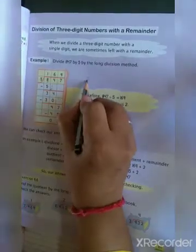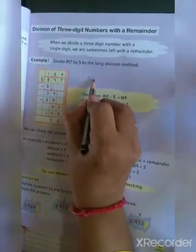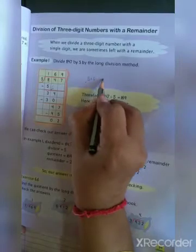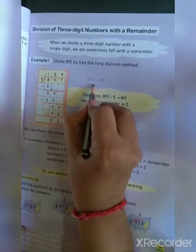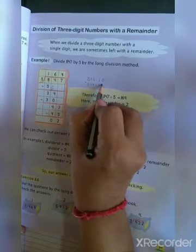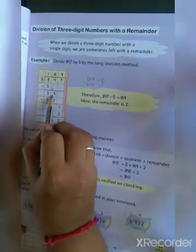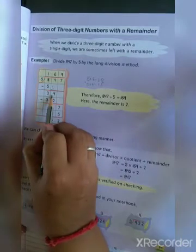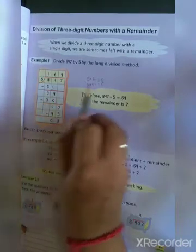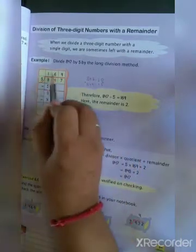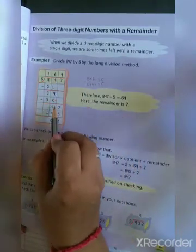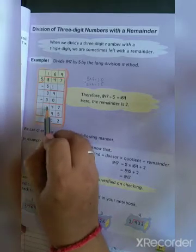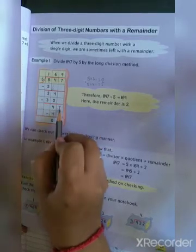Now, 5 sixes are 30 and 5 sevens are 35. So 5 sevens, 35, is more compared to this value. So what we have to do? 5 sixes are 30. 4 minus 0 is 4, 3 minus 3 is 0, and bring down 7.